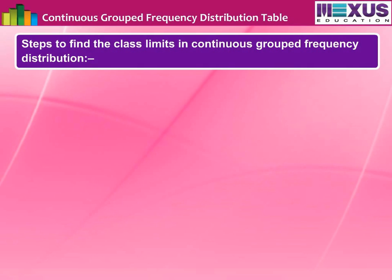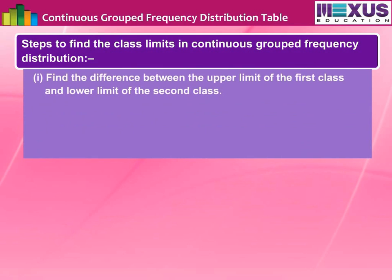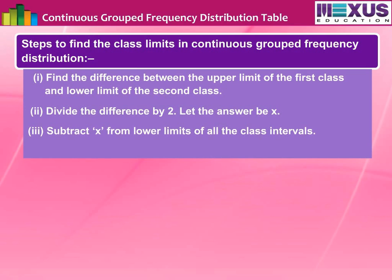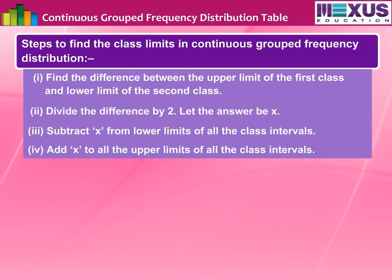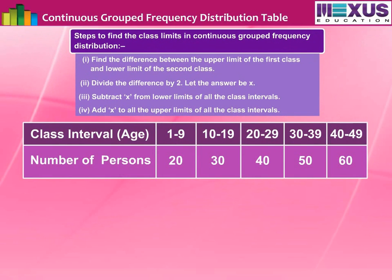To find the class limits in a continuous grouped frequency distribution, follow these steps: First, find the difference between the upper limit of the first class and the lower limit of the second class. Second, divide the difference by 2 — let the answer be x. Third, subtract x from the lower limits of all class intervals. Fourth, add x to all the upper limits of all class intervals. The new limits will be the true class limits. Form the frequency distribution table for the following data, which gives the ages of persons who watched a particular channel on TV.